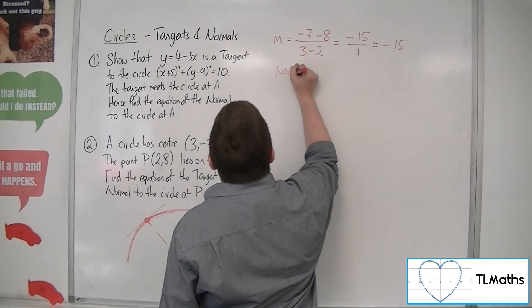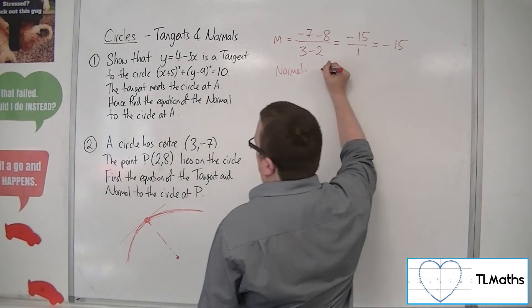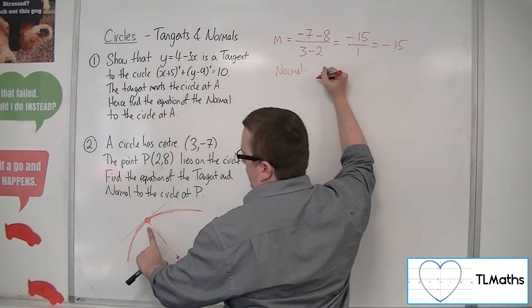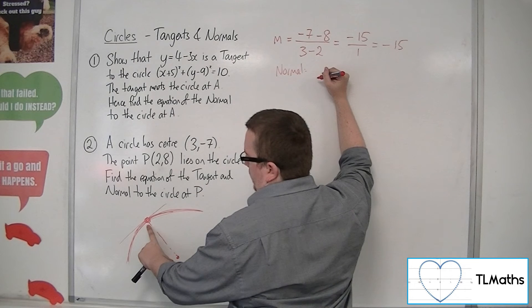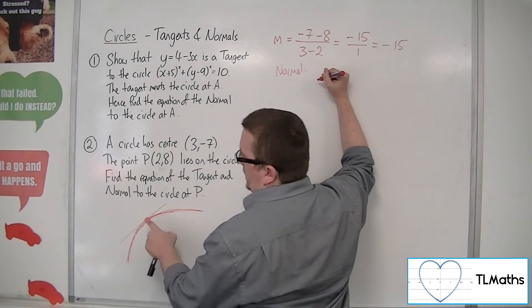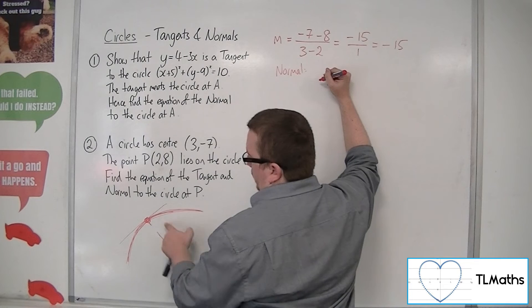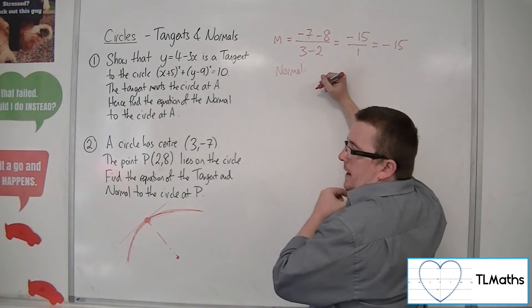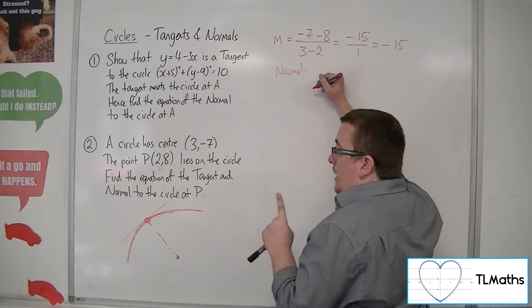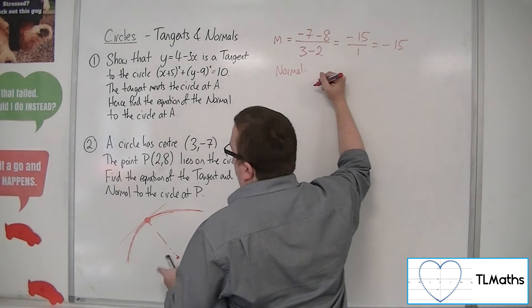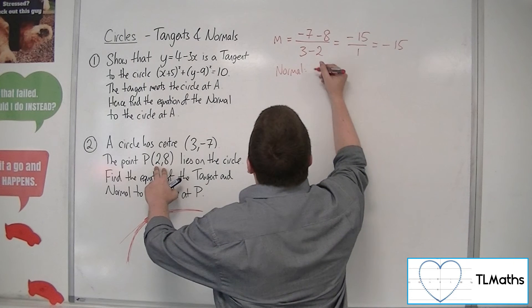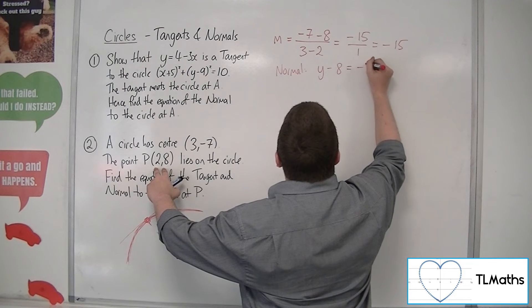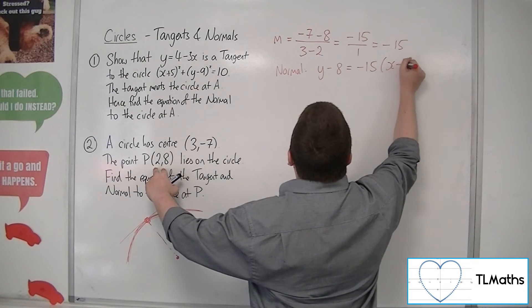So, the normal equation, using the y minus y1. Now we need to make sure that we substitute in either centre or point P here. For the normal, it doesn't make a difference, but for the tangent, it certainly will. I can't substitute the centre in for the tangent, so we've got to be careful. So, tread carefully, but for the normal, it doesn't matter. For this one, I'm going to substitute in 2, 8. So, y minus 8 is equal to the minus 15 that we found, x minus 2.